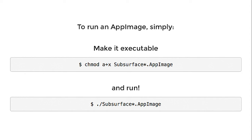With an AppImage, it's very different. To run an AppImage, you simply download one file, you make it executable by a little command or by the GUI, and finally you can run the application. That's it. No repositories, no fiddling around, just downloading one file from the original application author, and you're able to run it.